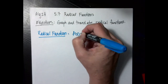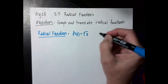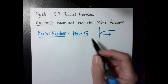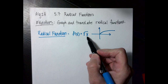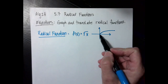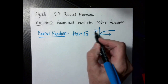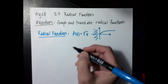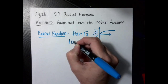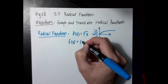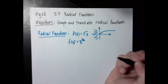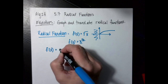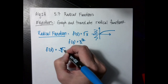f of x is going to equal the square root of x, and the graph of it looks like this. I can't take the square root of a negative number, which is why the graph starts at 0, and over here it's basically undefined. This is the same thing as writing f of x equal to x raised to the 1/2 power. I could also have f of x equal to the third root of x.